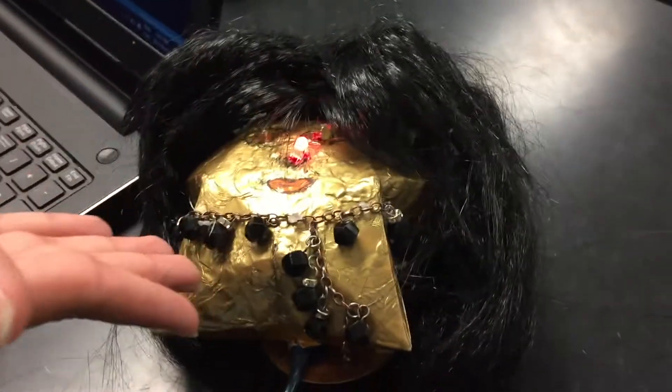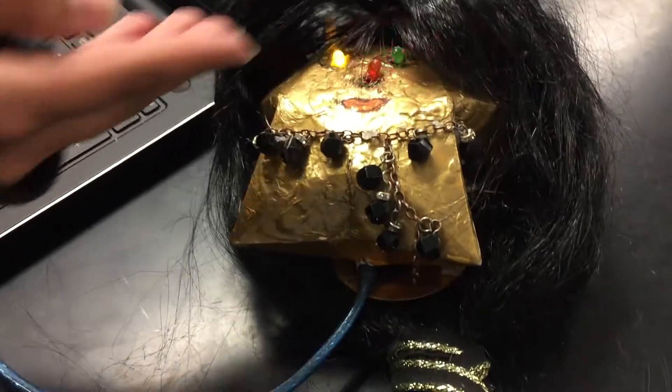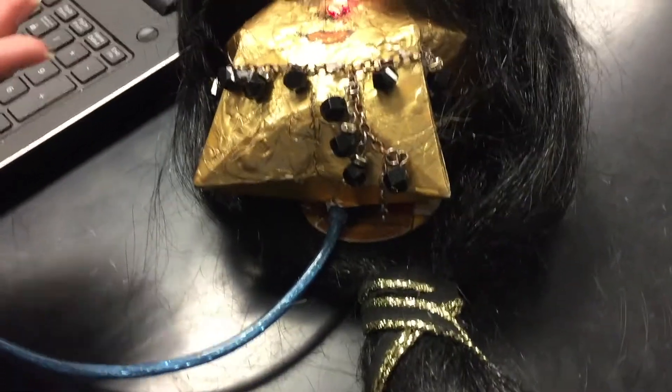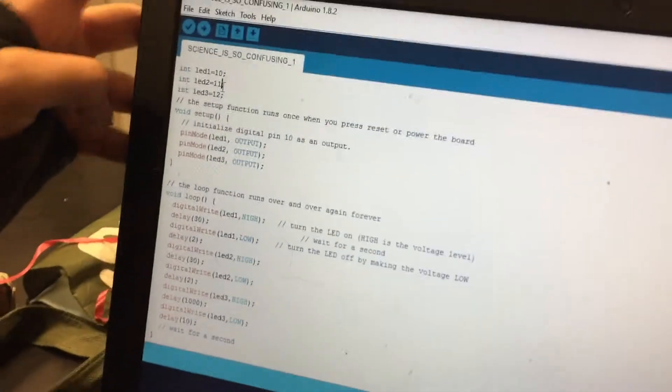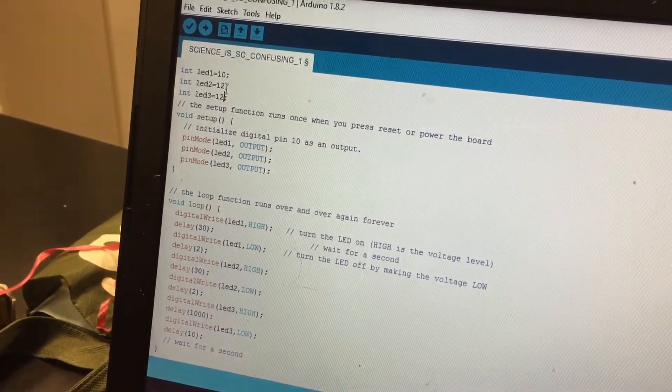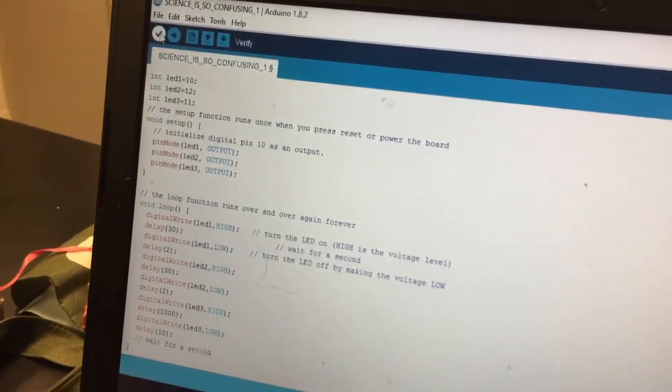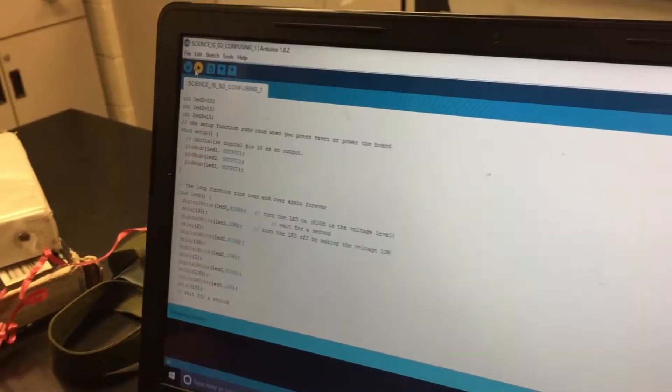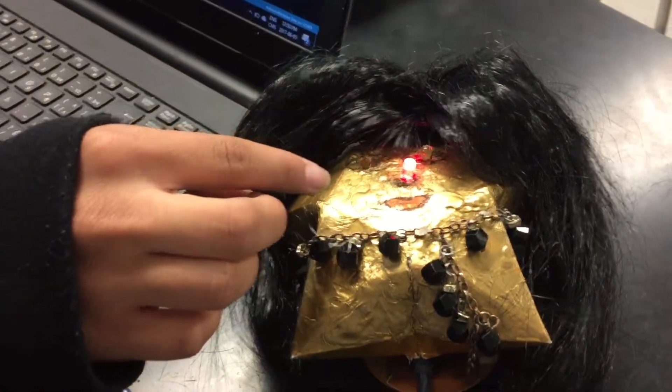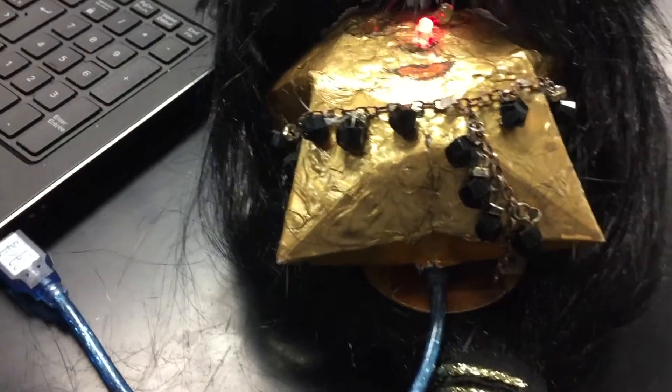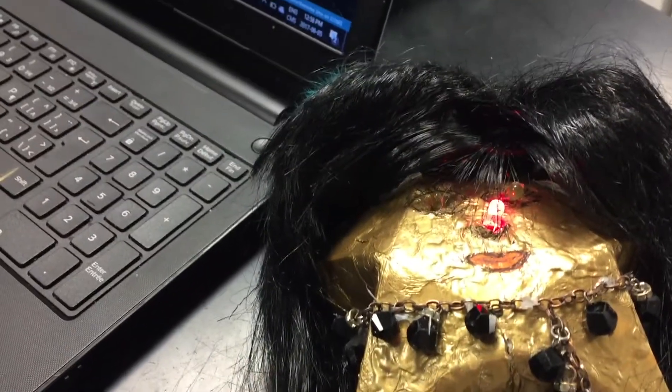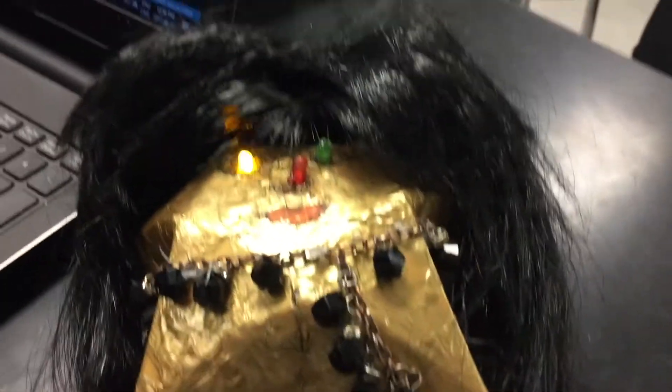There is a circuit inside connected to this Arduino software, so we can change how they light up, in which direction, or how fast. We can change which direction by changing the pin it's connected to. If we write 12 and 11 here and upload it, it's gonna look differently.